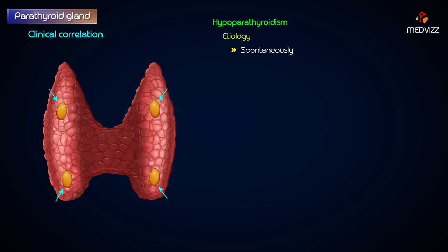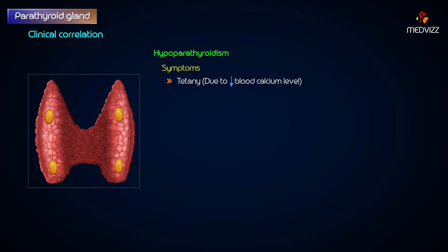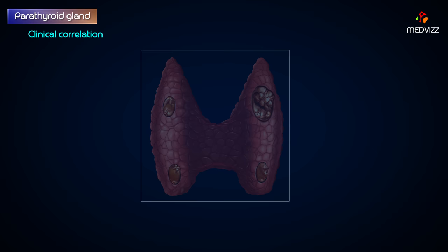Hypoparathyroidism may occur spontaneously or due to inadvertent removal of the parathyroid glands during thyroidectomy. It results in tetany due to low blood calcium level. Clinically, the tetany presents as increased neuromuscular excitability causing convulsions and carpopedal spasms.